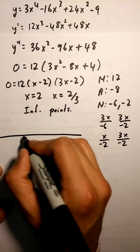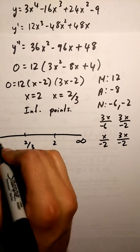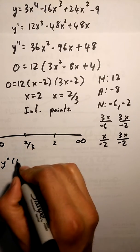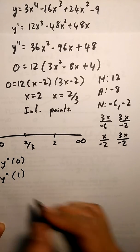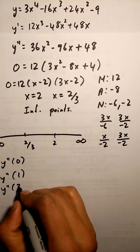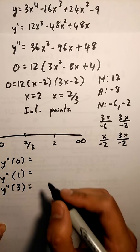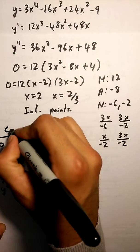Then once I get these, I put them on my number line. I'm going to test y double prime of 0, y double prime of 1, and y double prime of 3.